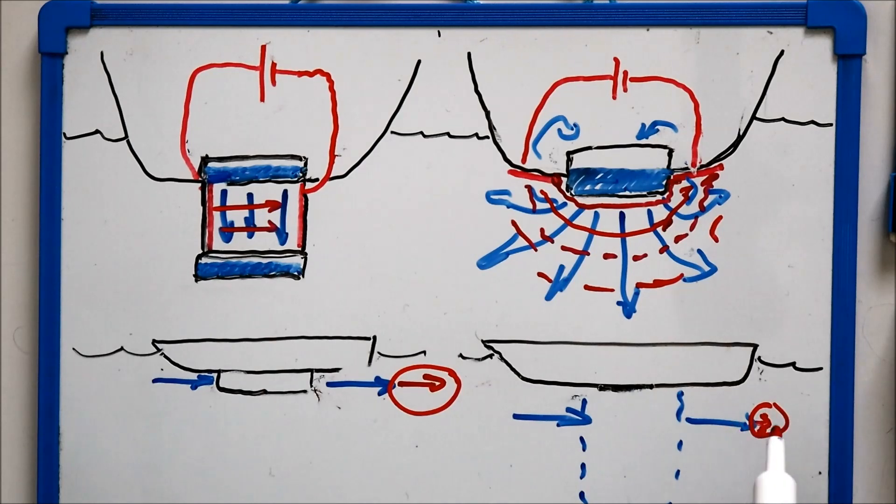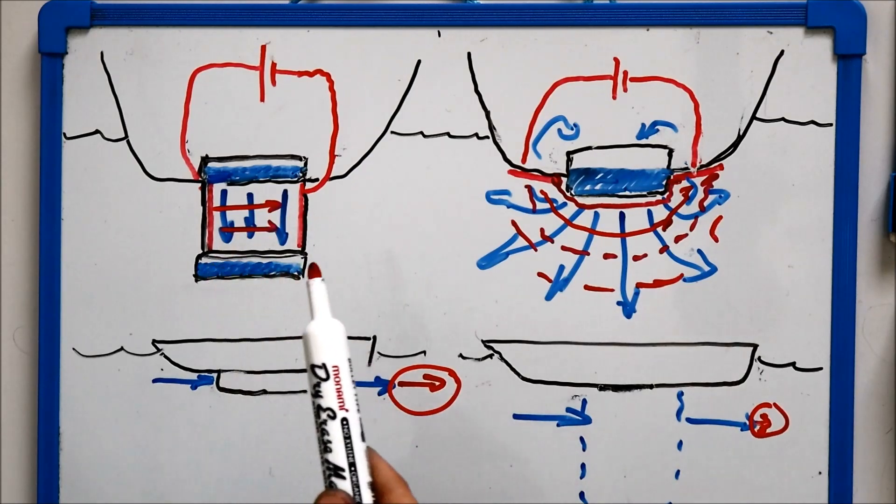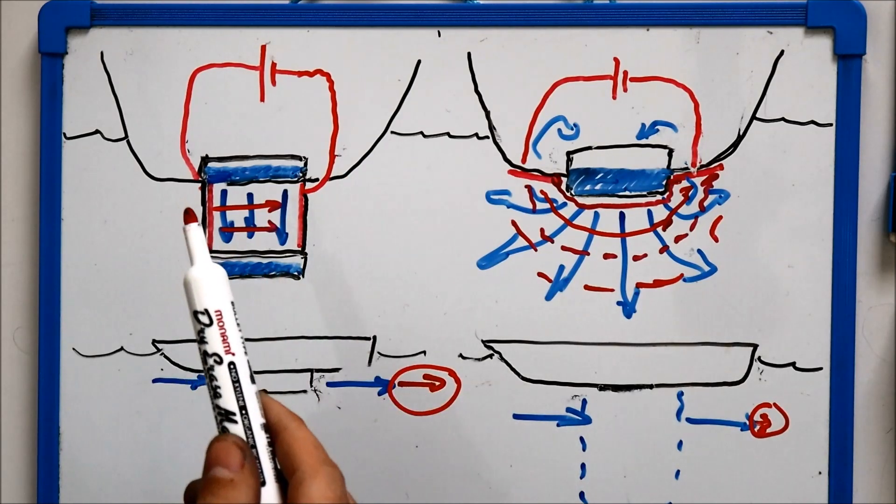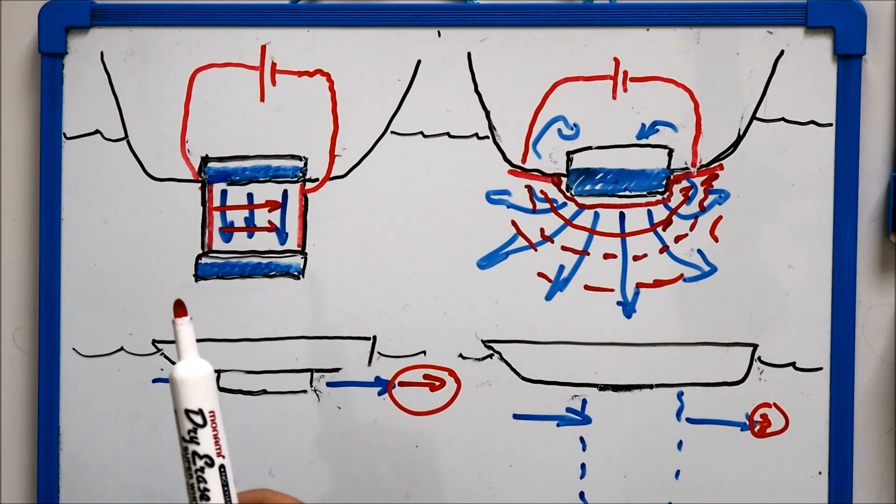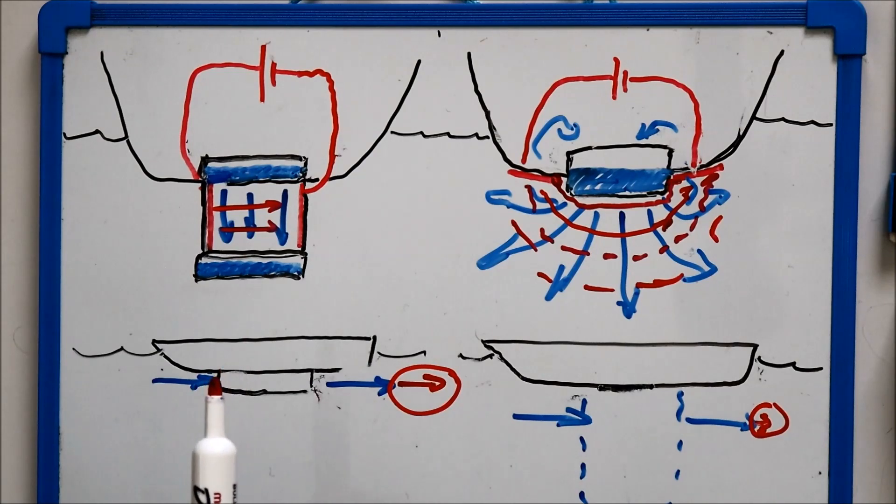So, the less energy you impart to the wake, the better the efficiency will be. So, this external flow configuration definitely has an advantage as far as efficiency is concerned. You can always increase the section area of that duct, but that has secondary implications, namely surface area. And that's the next major difference between these two configurations.